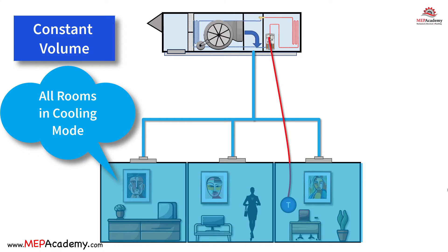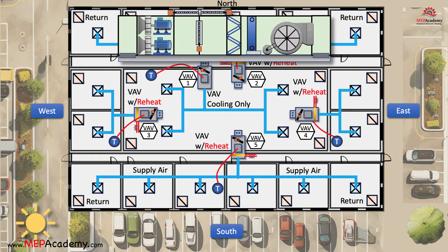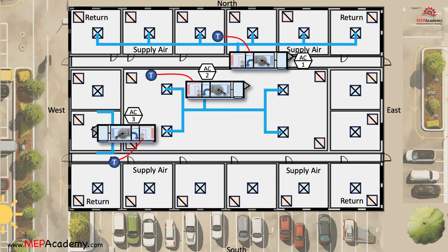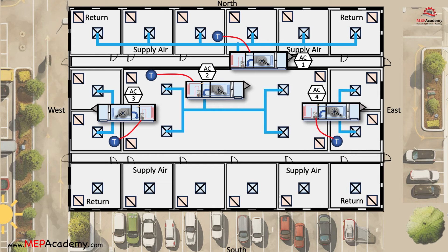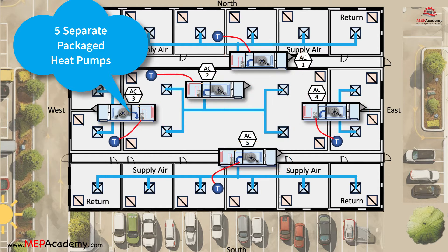They are less suited for buildings with diverse thermal loads. As you can see in this diagram, all rooms have to be in either cooling or heating mode — there is no option for one room to be in cooling while another is in heating mode. The VAV system can use one large air conditioner, whereas to keep the same five zones with constant volume, you would need a separate package constant volume AC unit for each zone, requiring five separate heat pumps.